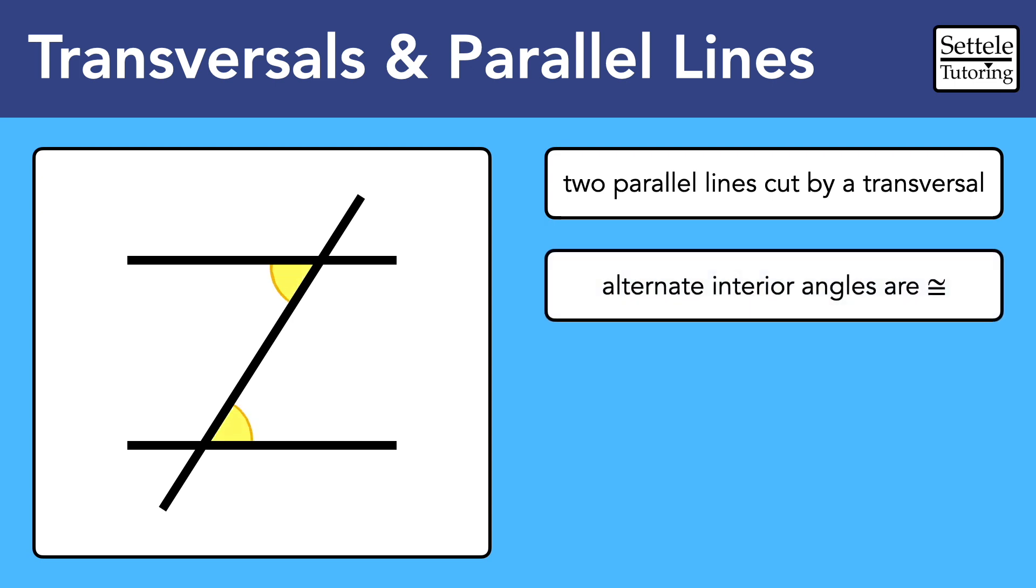The most important one is alternate interior angles, which are represented by the two angles in the corners of the Z shape. These angles are congruent, meaning that they have the exact same angle measure.